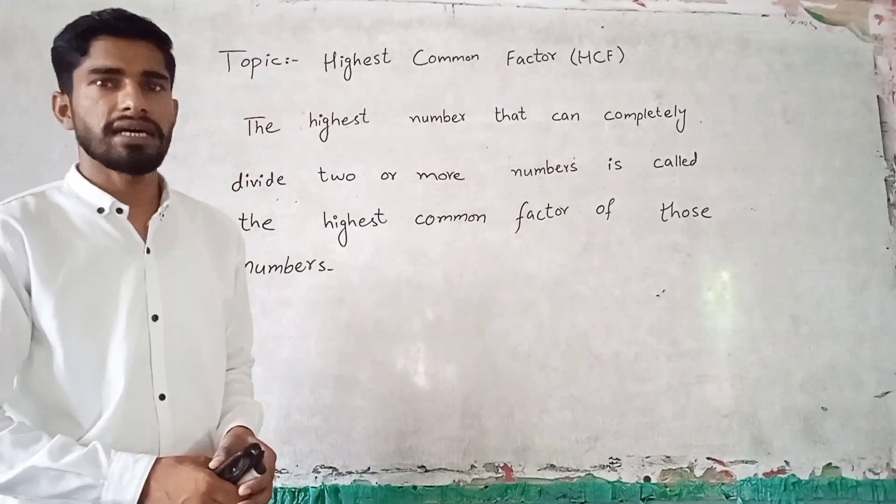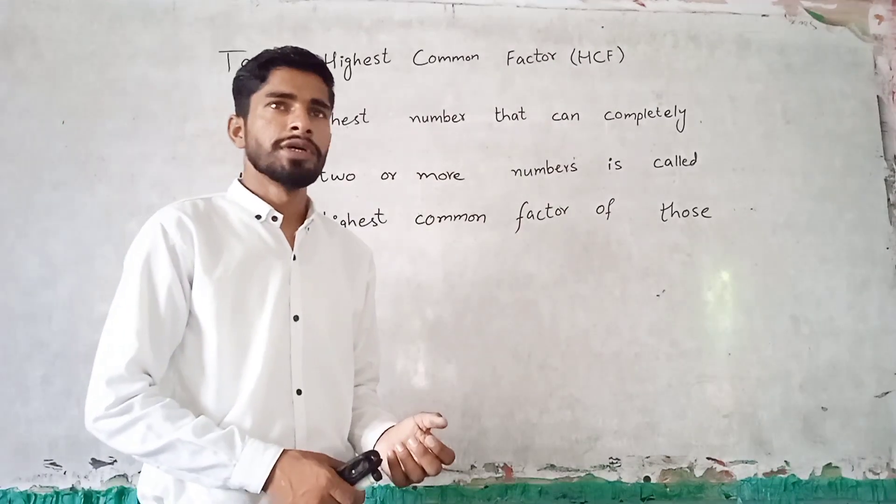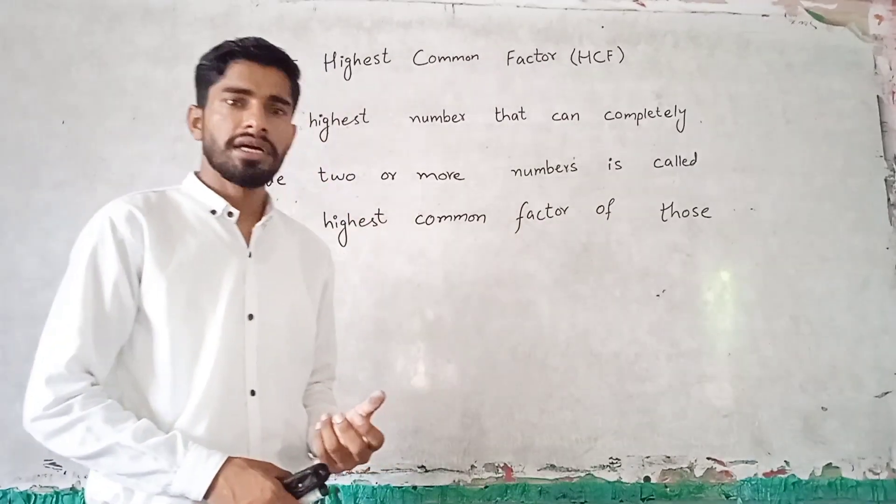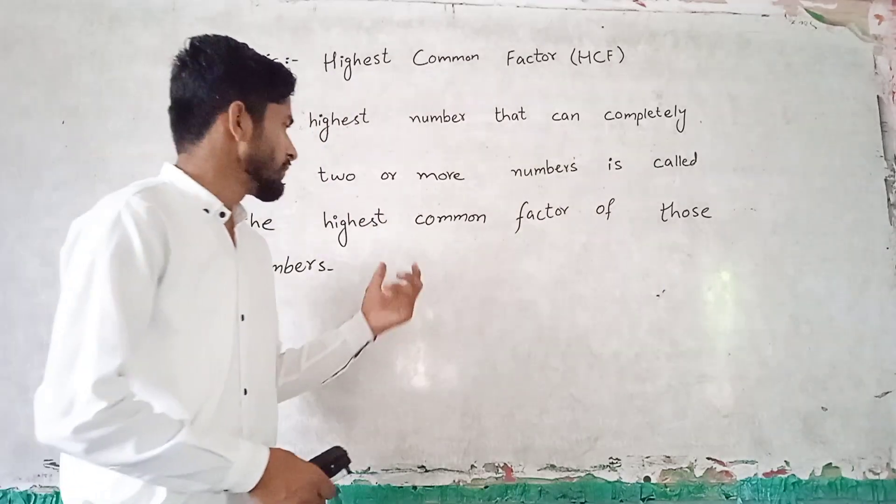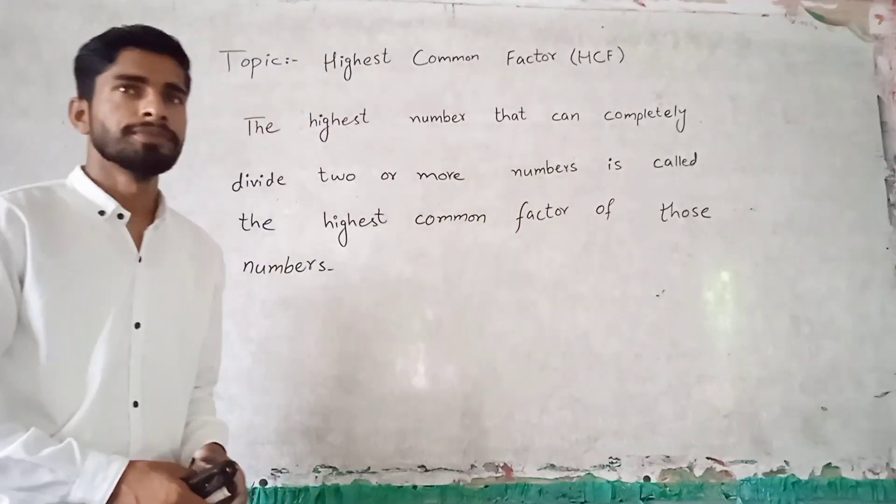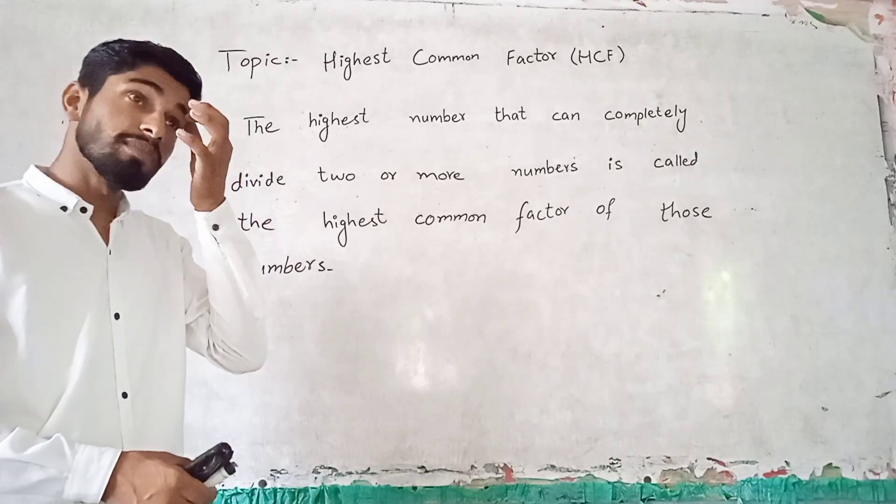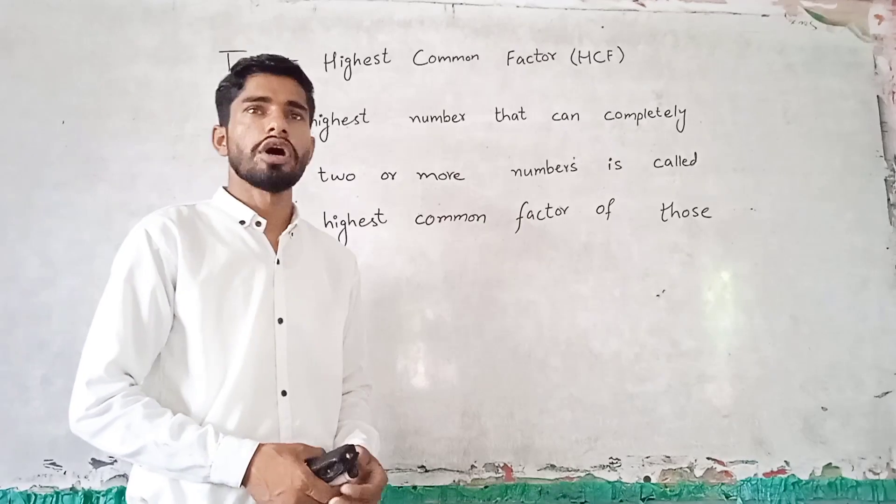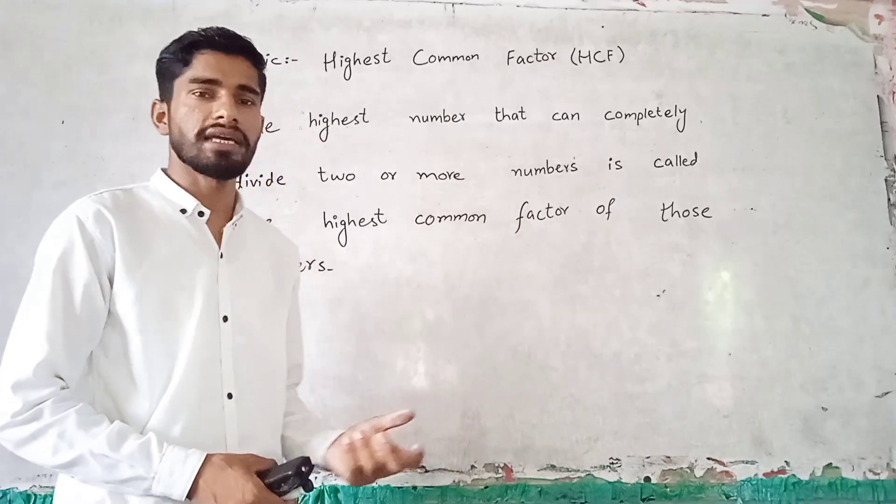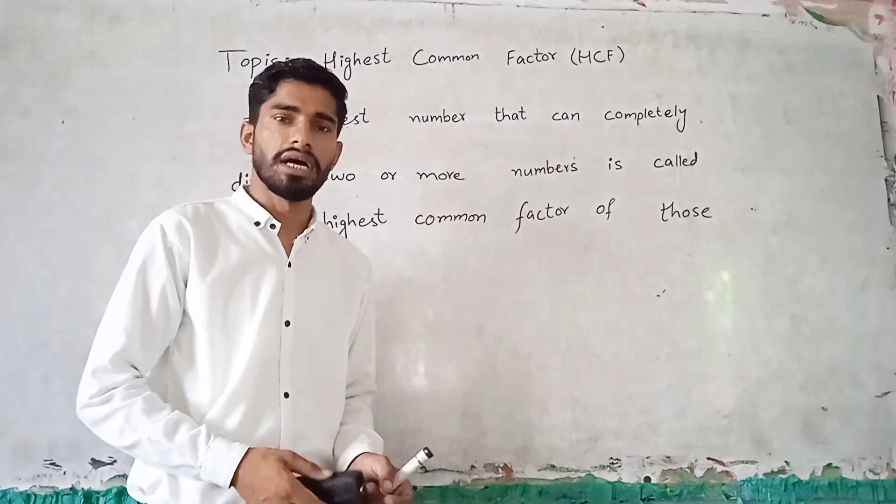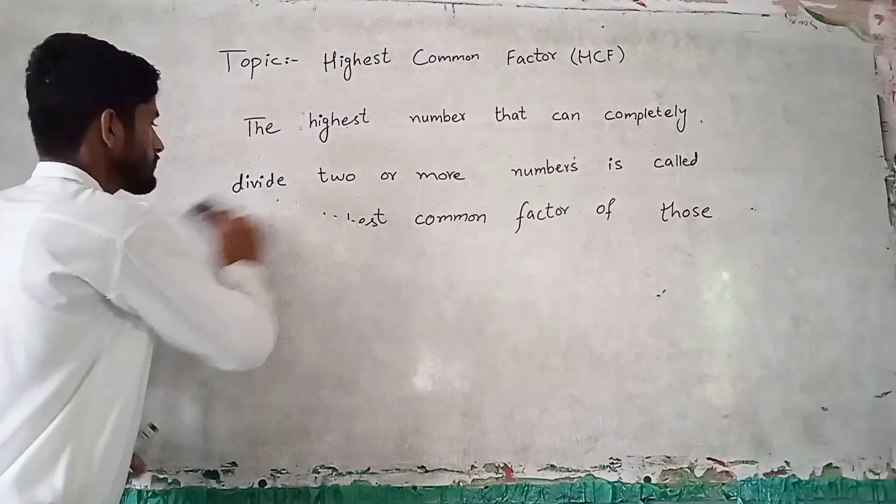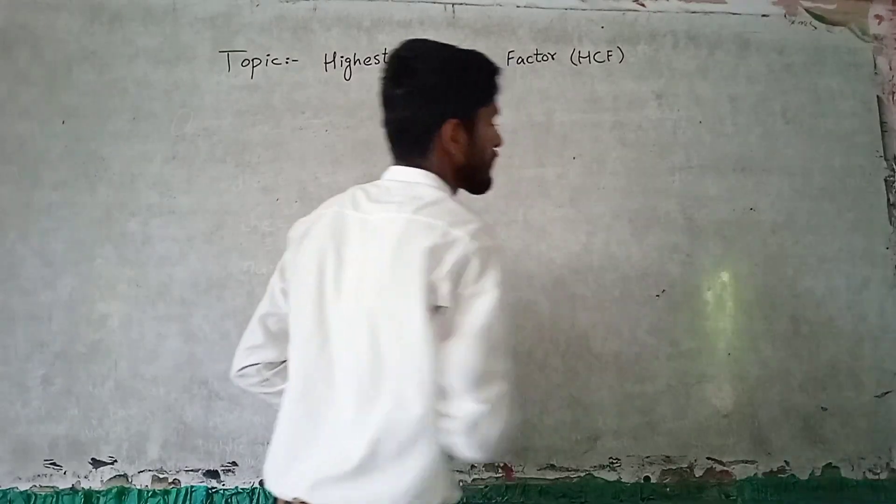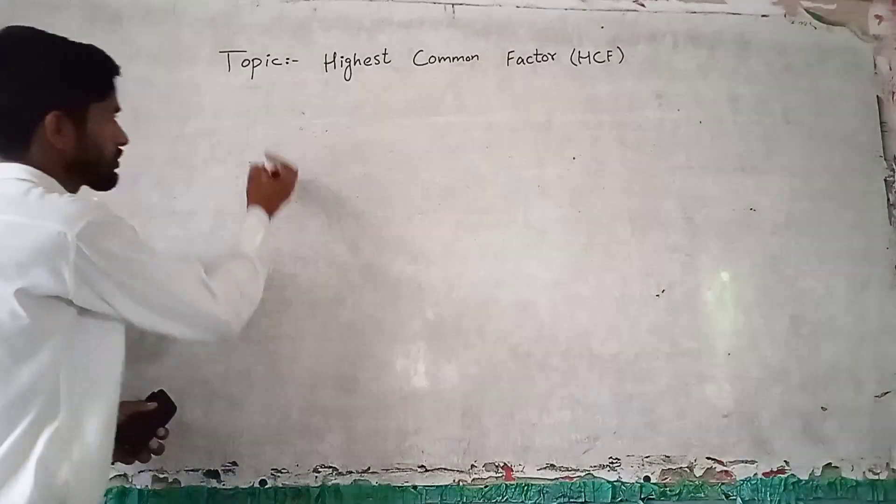The highest number which can divide two or more numbers completely, we call it the highest common factor. We can see which number can divide two or more numbers, and we will see it from those numbers in this example. My question is: